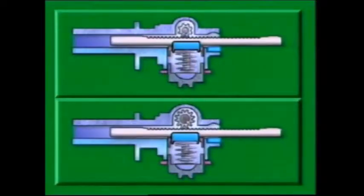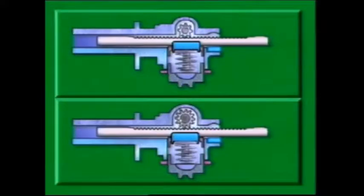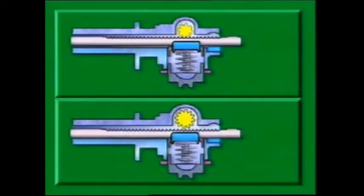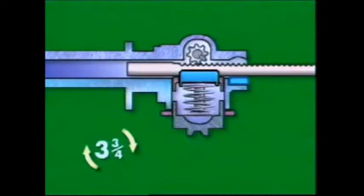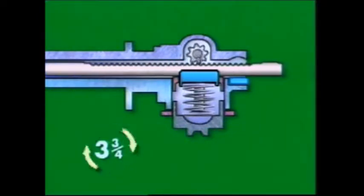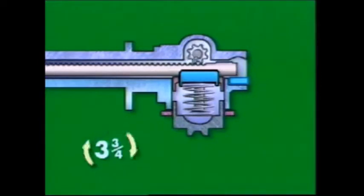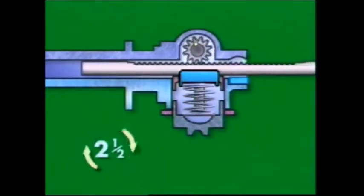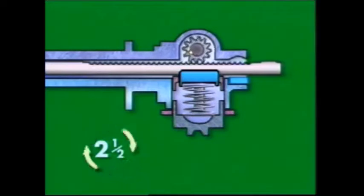Mechanical advantage is gained by the reduction ratio. The value of this ratio depends on the size of the pinion. A small pinion gives light steering, but it requires many turns of the steering wheel to travel from lock to lock. A large pinion means the number of turns of the steering column is reduced, but the steering is heavier to turn.